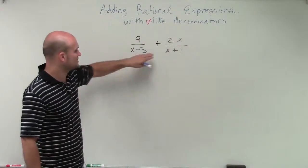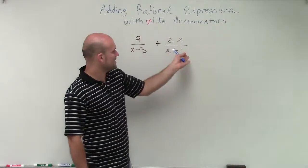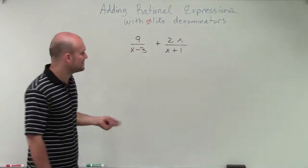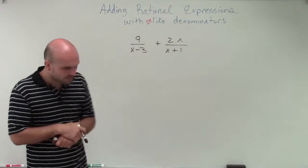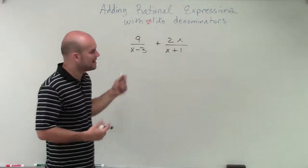And we can't just say, what do negative 3 and 1 have in common? Because if I multiply this one by negative 3 and this one by 1, I'm not going to get common denominators at all. So what I want to do is look at this and see what would be my least common multiple.